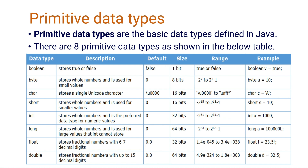There are eight primitive data types available in Java: boolean, byte, char, short, int, long, float, and double. Boolean stores only true or false. Byte stores only whole numbers and small integer values. Char can store only a single character.